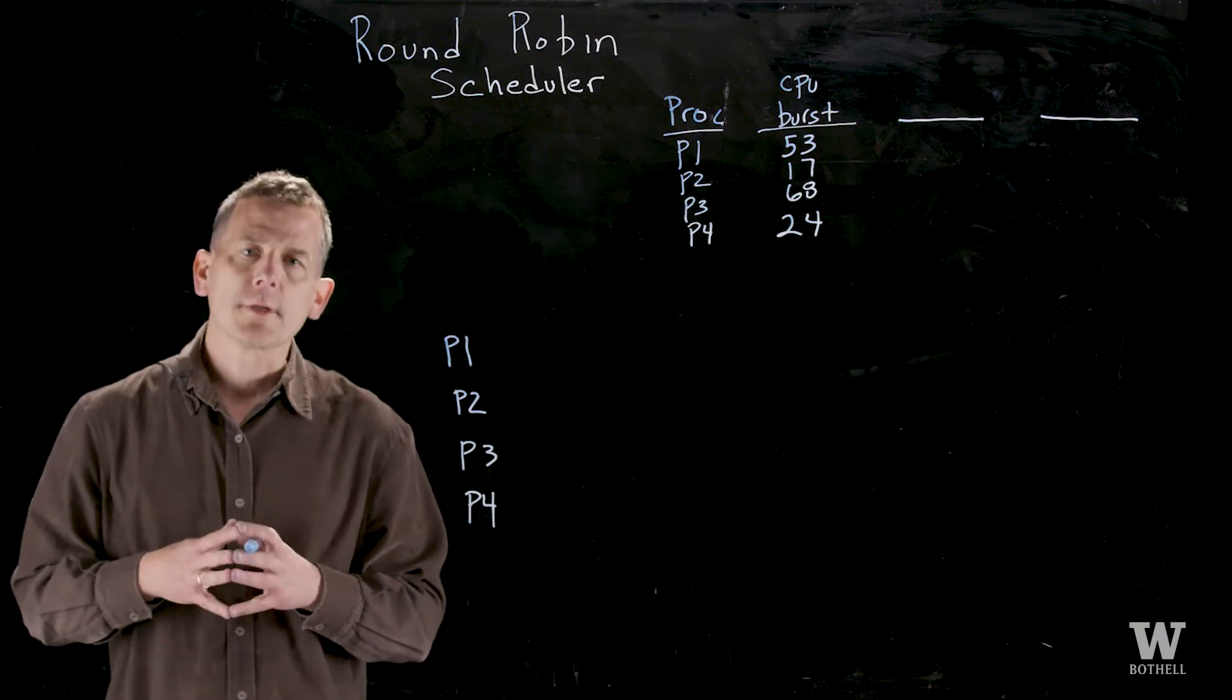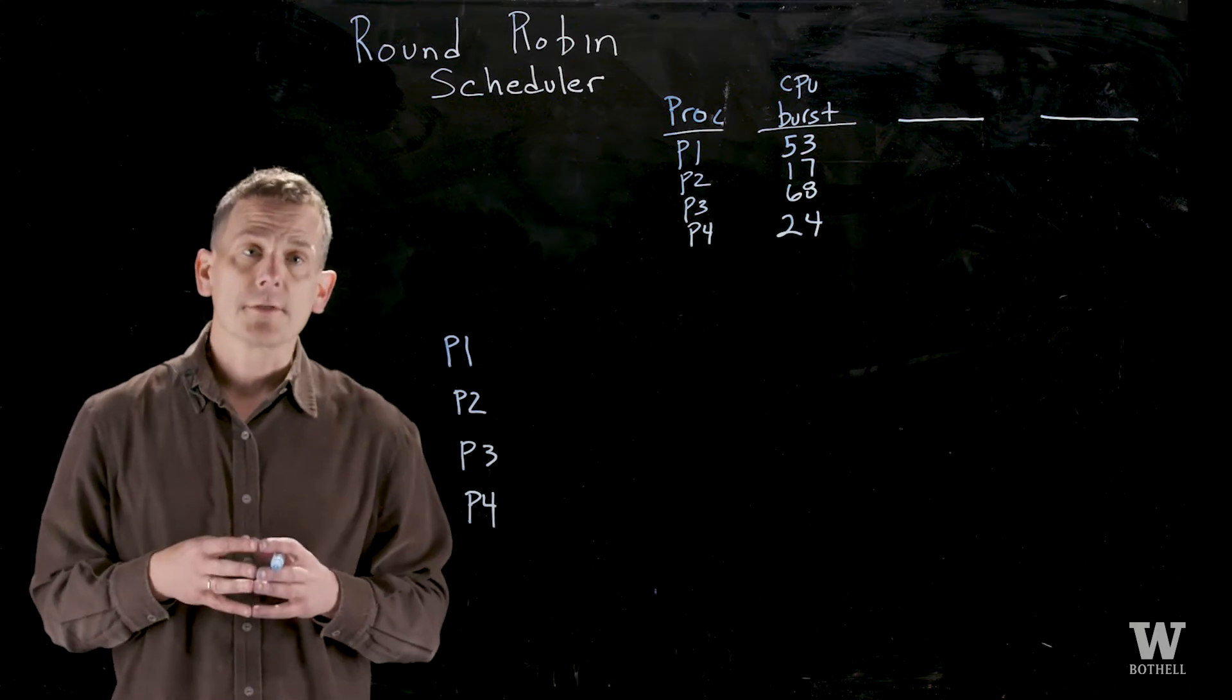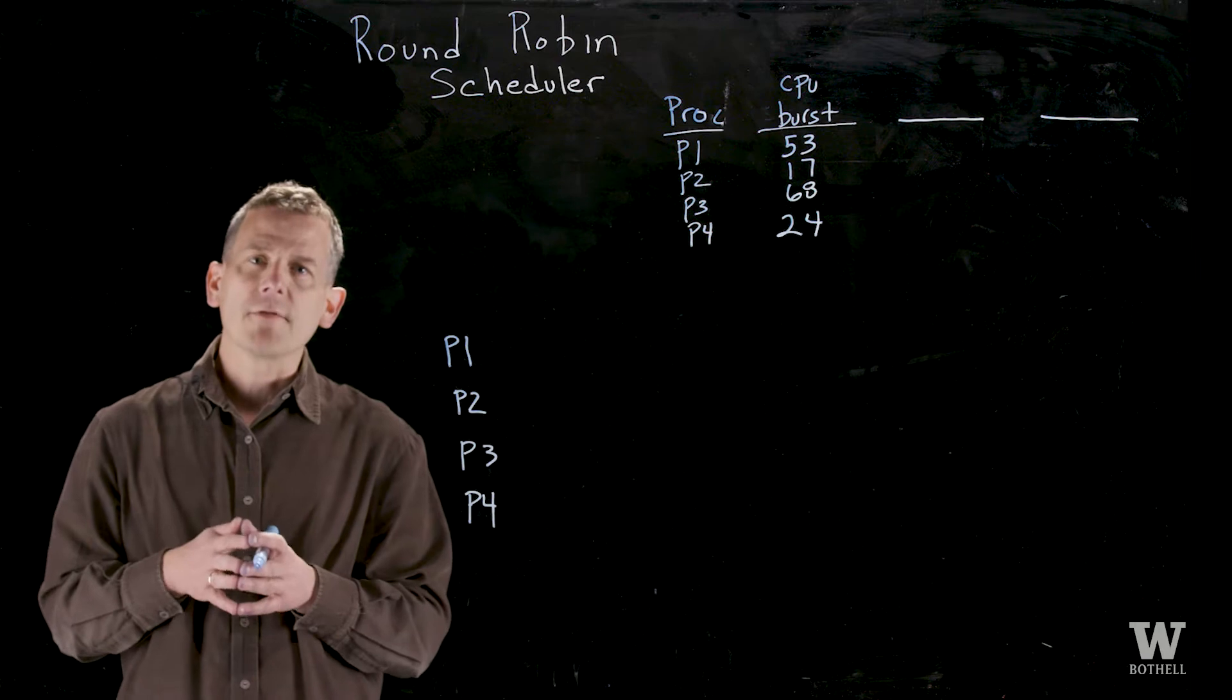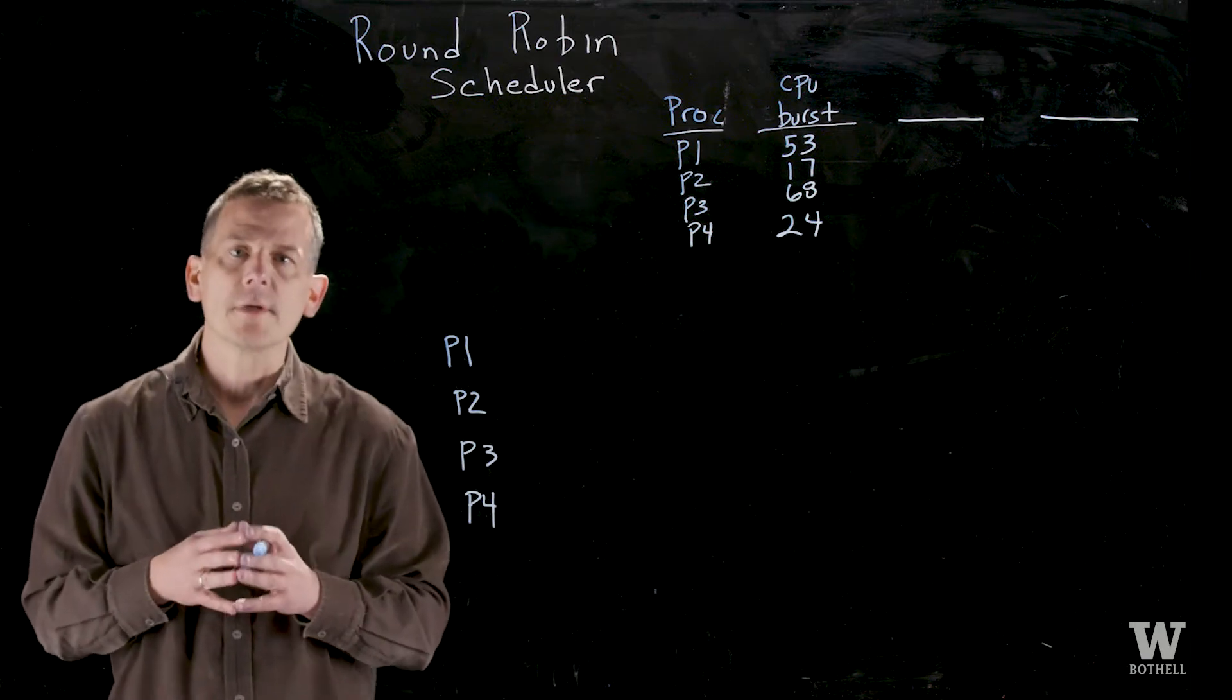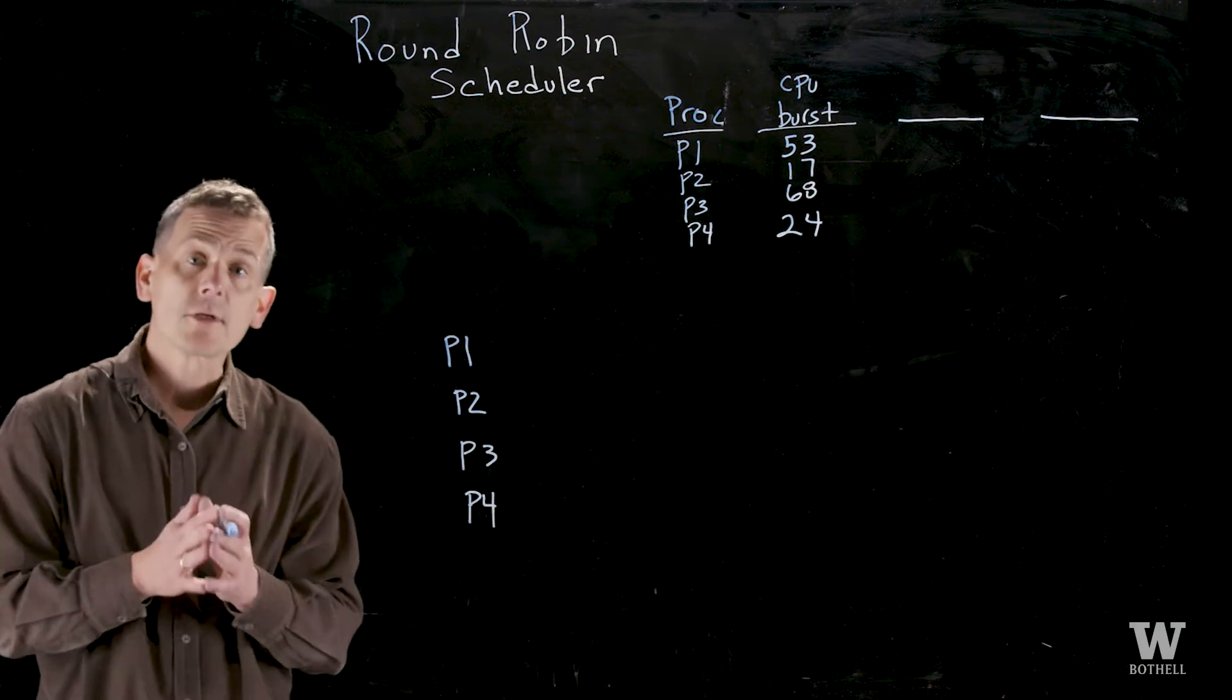In general, for the round robin scheduler we're worried about fairness across the processes, and so a process is given a certain amount of time before the operating system interrupts it and says you're done, somebody else gets a turn. That amount of time is called the time quantum.